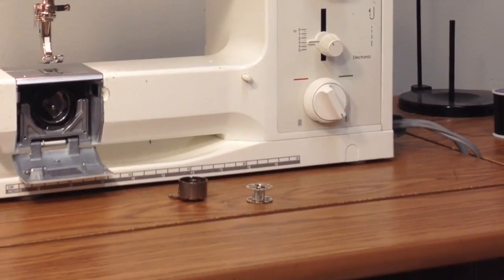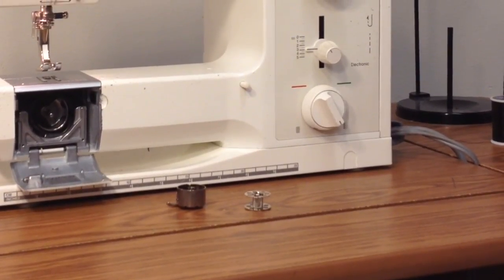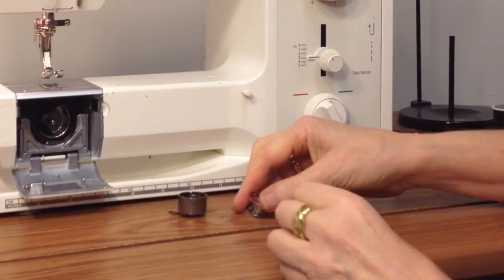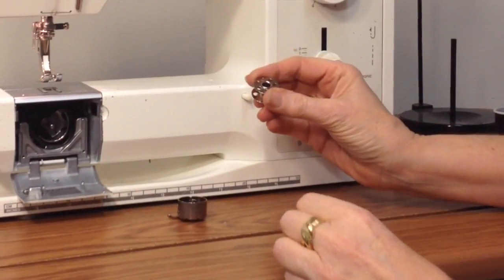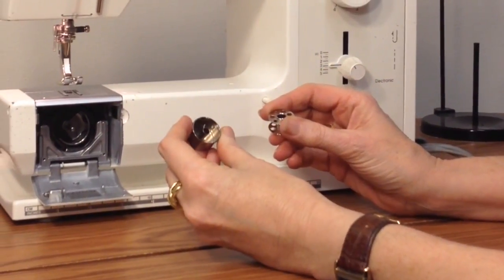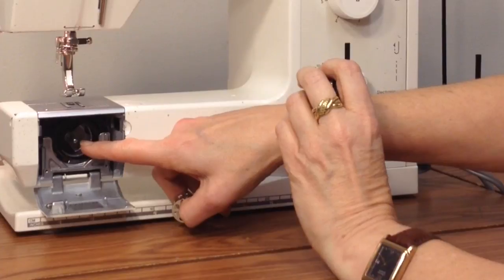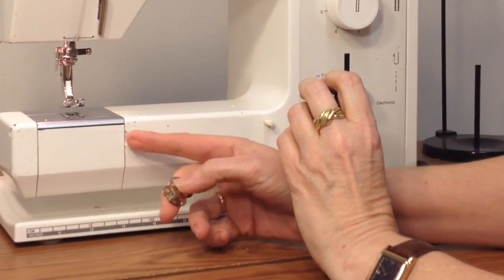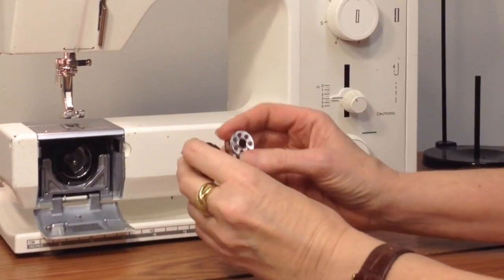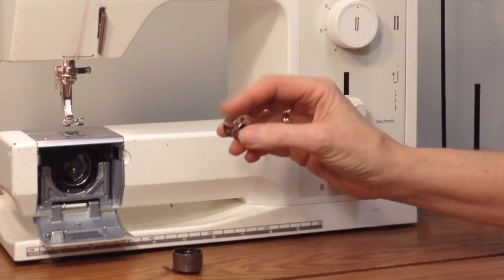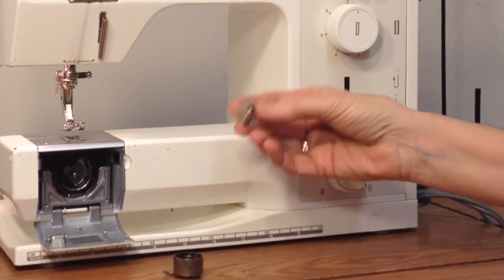In this video I'm going to show you how to wind a bobbin for the Bernina 1008. Remember, the bobbin fits into the bobbin casing that then goes into the bobbin housing. We're dealing with the bobbin itself right now.